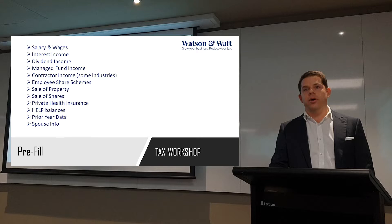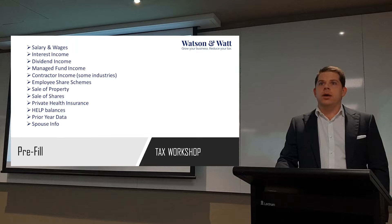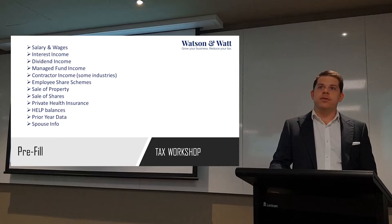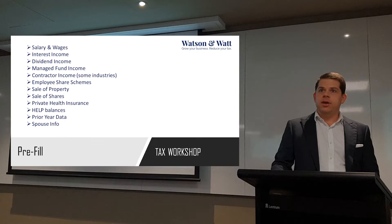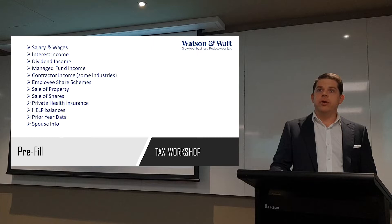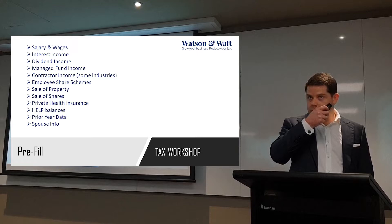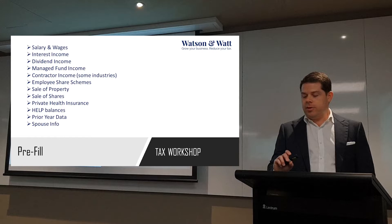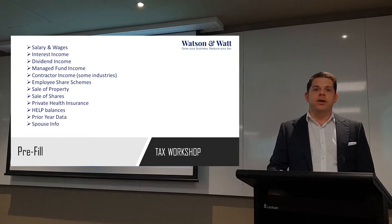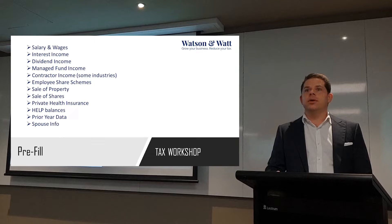Industries like building and cleaning. Employee share schemes - if you work for startups or companies that have employee share schemes, the data will already be there, which makes it a lot easier these days. Sale of property and sale of shares: property comes from the titles office, so if you sell a property the ATO will know about it and they'll be looking for a capital gain in your tax return. Sale of shares comes from the share registries. Private health insurance funds send the data across. Your health balances, prior year data, and lastly your spouse information - who your spouse is, their date of birth, all that sort of stuff.